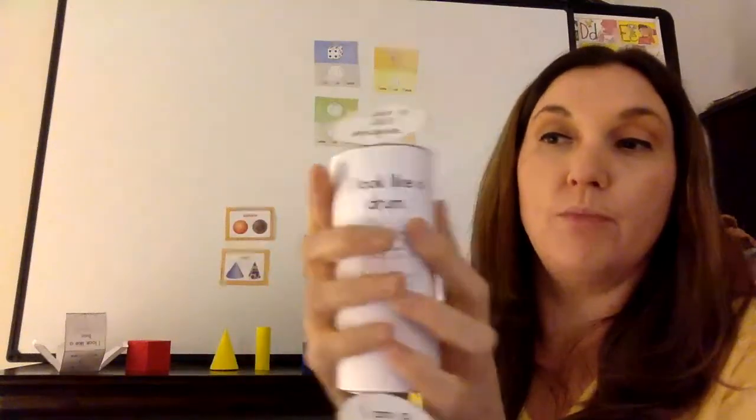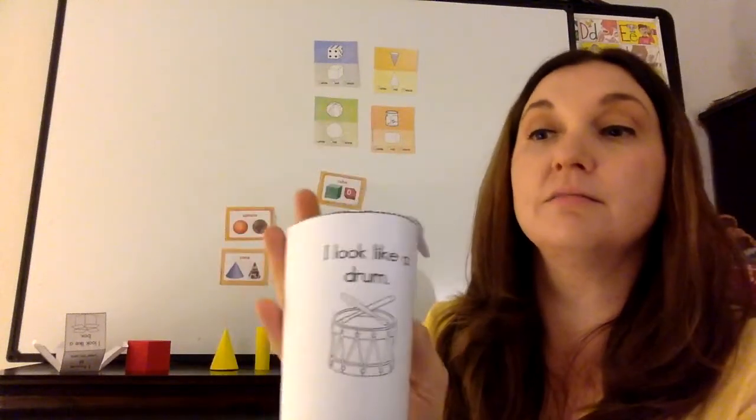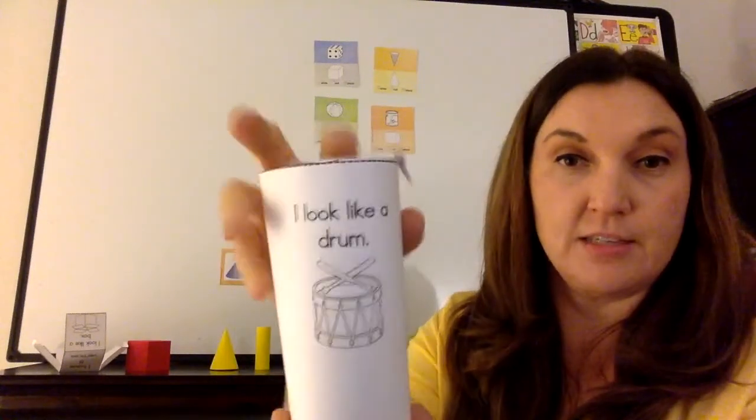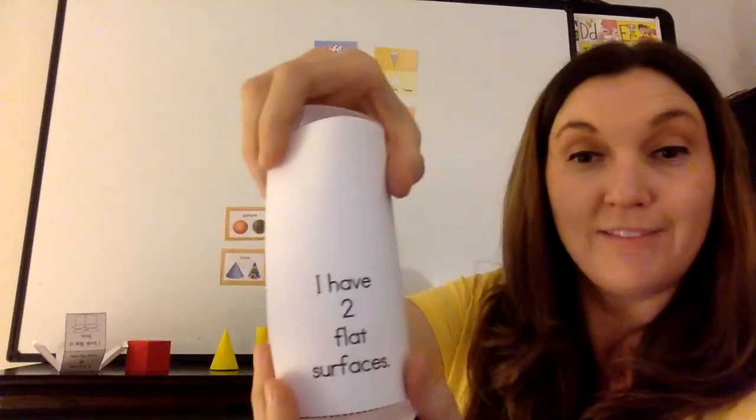I have one curved surface. So when we put this together, this is curved, right? This is our curved surface. And I have two flat surfaces. So the top and the bottom are both flat. I have one curved surface. I have two flat surfaces.